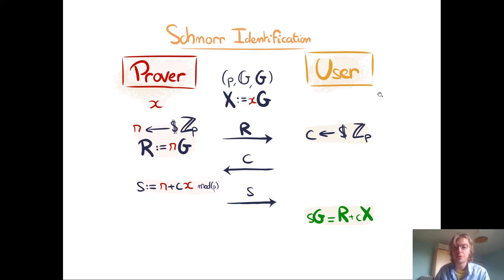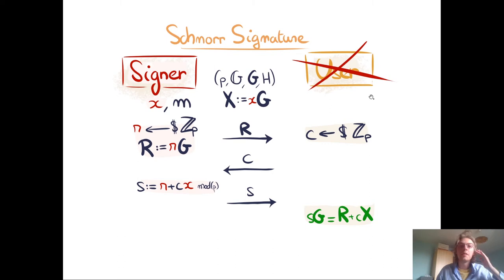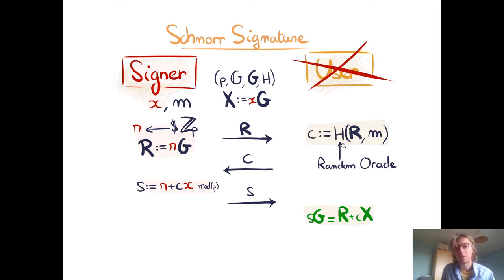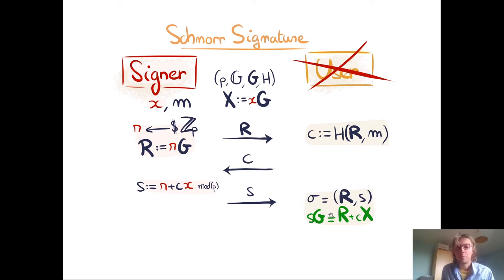To transform this protocol into a signature scheme, we don't need a user anymore — the prover becomes a signer who wants to sign message M. The signer computes its own challenge using a hash function: C becomes the hash of R and M. Using a random oracle we can prove security of this signature scheme. The signature is the pair (R, S), and the verification equation is the same — given message M and signature (R, S), we verify using S, R, and C computed as the hash of R and M.